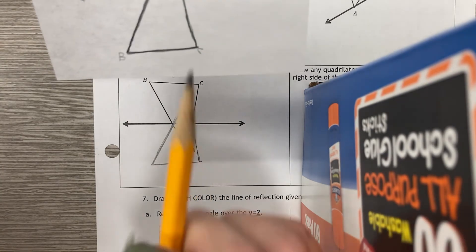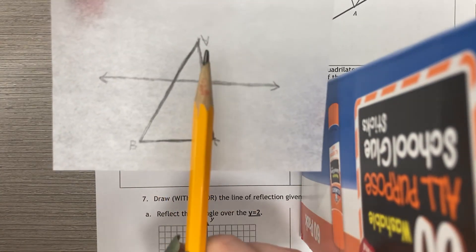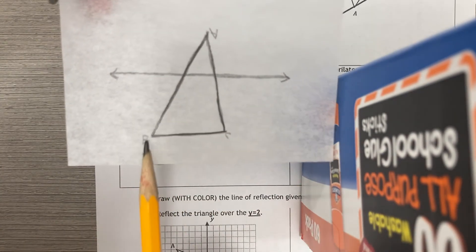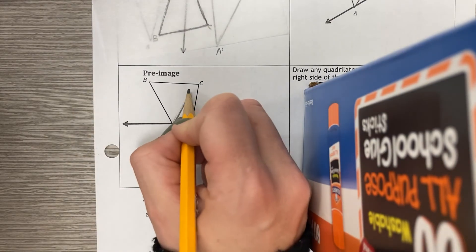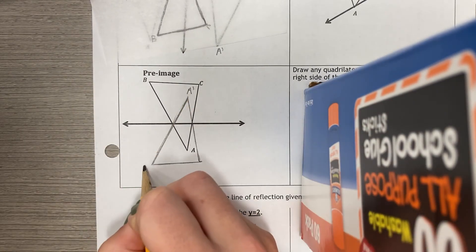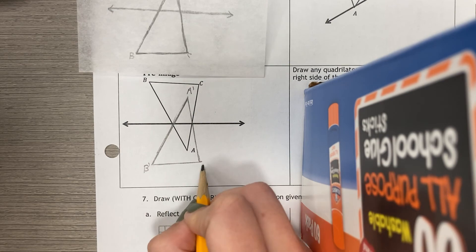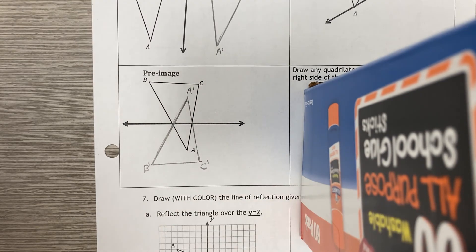Then going back to my paper to help me out, A should be up at the top, B is on the left, and C is on the right. So I've got A' up at the top, B' on the left, and C' on the right. There we go.